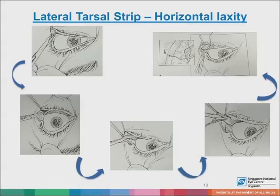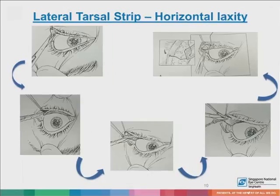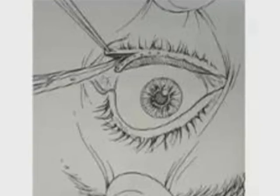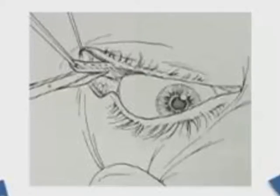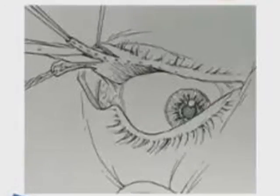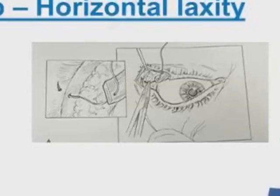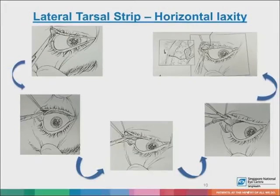For the lateral tarsal strip, as covered in the entropion lecture: we fashion a lateral tarsal strip by performing a lateral canthotomy and inferior cantholysis, remove the anterior lamella, fashion the strip, diathermize the posterior conjunctiva to prevent cyst formation, remove the lid margin, and then oppose the lateral tarsal strip onto the lateral orbital rim periosteum, thus addressing the horizontal laxity.